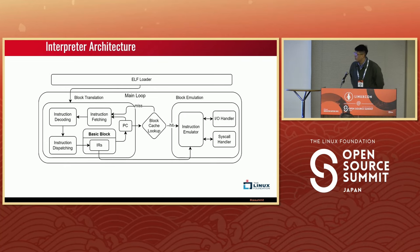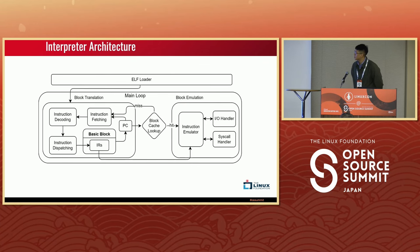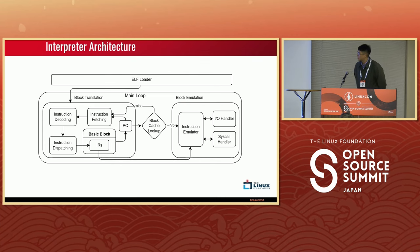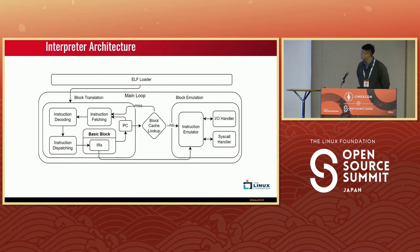The interpreter architecture starts with an ELF loader that loads user RISC-V programs compiled by the RISC-V toolchain. We then have two main modules: the block translation module and the block emulation module. The block translation module handles instruction fetching, decoding, and dispatching. We divide the ELF file into basic blocks, and the decoding information and emulation functions are stored in the basic block data structure. The block emulation module then executes the instructions by invoking the emulation functions.